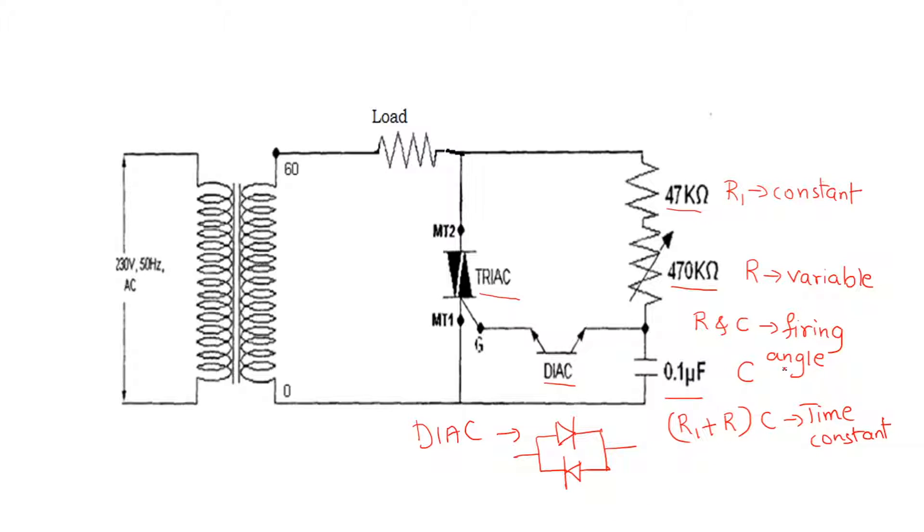How can we vary the firing angle using resistor R and capacitor C? When the resistor value R is 0, the current will be maximum. The resistance R1 will protect the DIAC and TRIAC against very high voltage appearing across it. So R1 acts as the current limiting resistor.